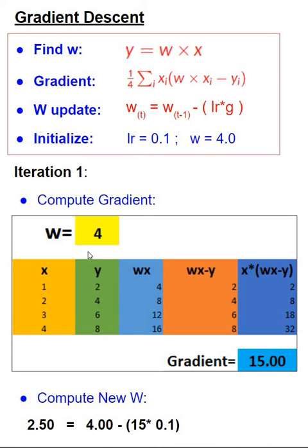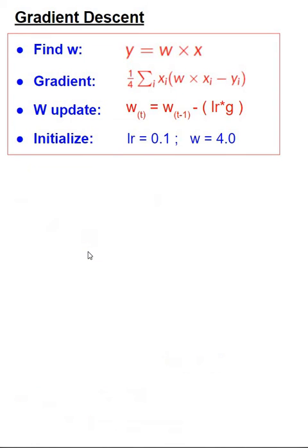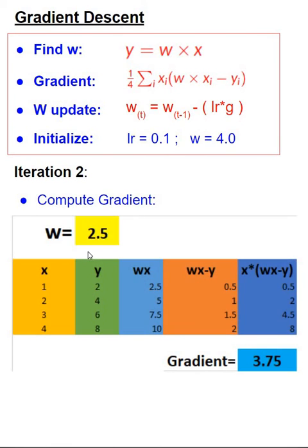So let's do one more iteration in a similar sequence. In the second iteration, we are going to be using w value of 2.50, which is what we got from the previous iteration. And again, as earlier, we have x column, y column, which is our input data, then we have extra columns computed which are wx and wx minus y and x times (wx minus y).